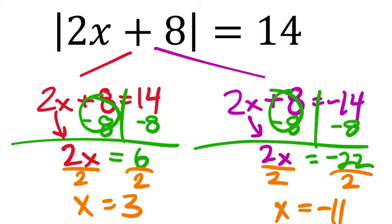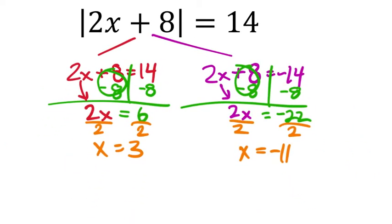Let's see if this one works. 2 times negative 11 is negative 22 — that checks out. Negative 22 plus 8 is negative 14, just like we planned. The absolute value of negative 14 is 14, so that's true. The two answers are 3 and negative 11.